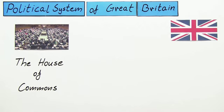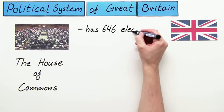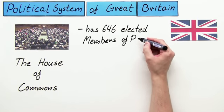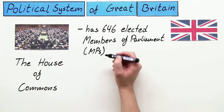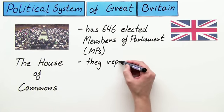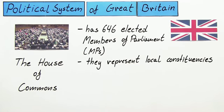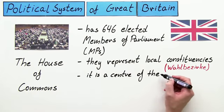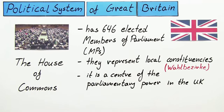The House of Commons has 646 elected members of Parliament, short MPs, who represent local constituencies. It is the centre of parliamentary power in the UK. In modern times all Prime Ministers and leaders of the Opposition have been drawn from the Commons.